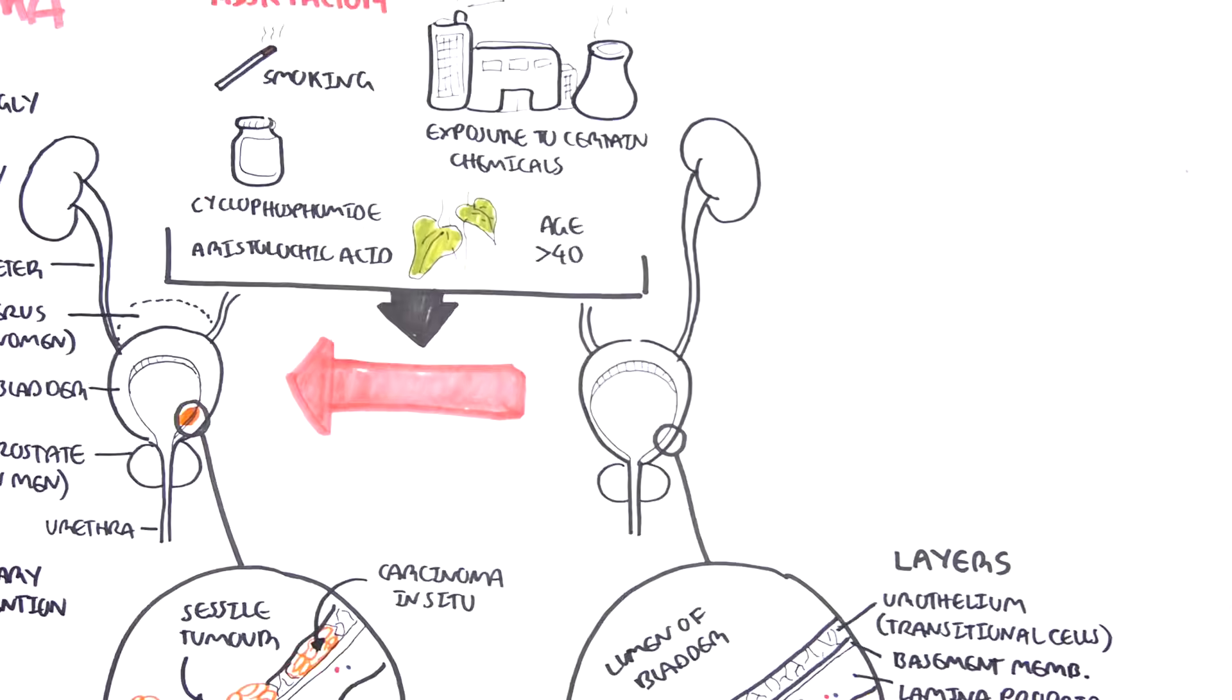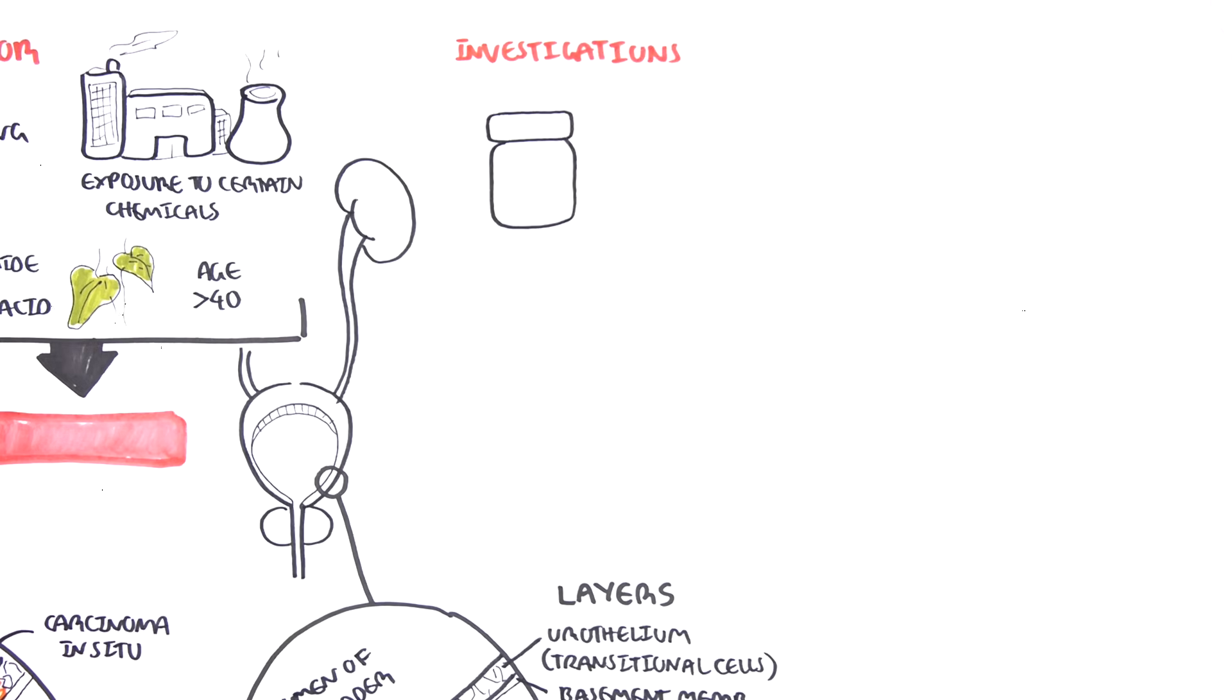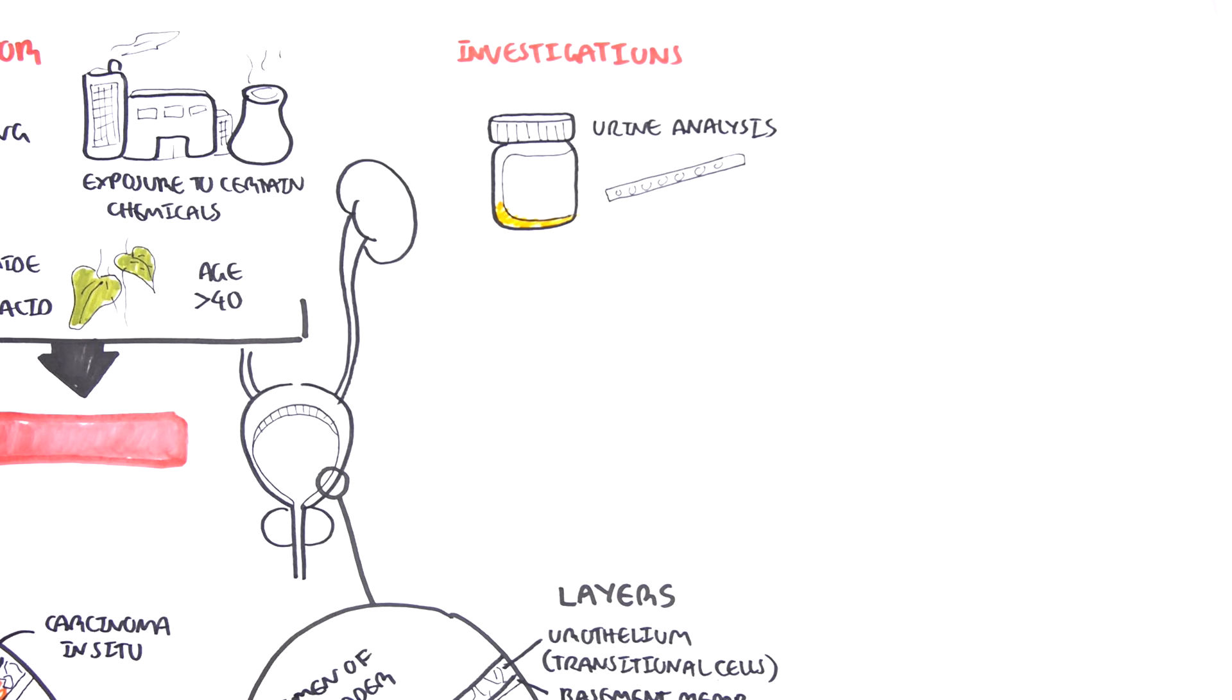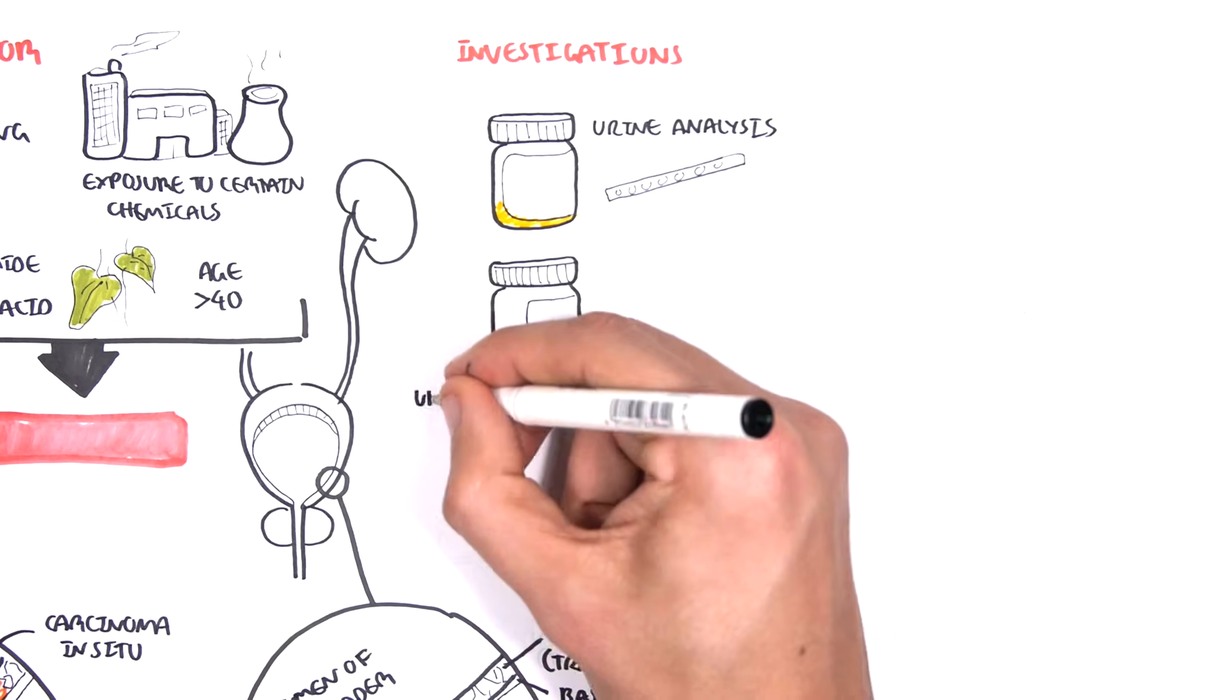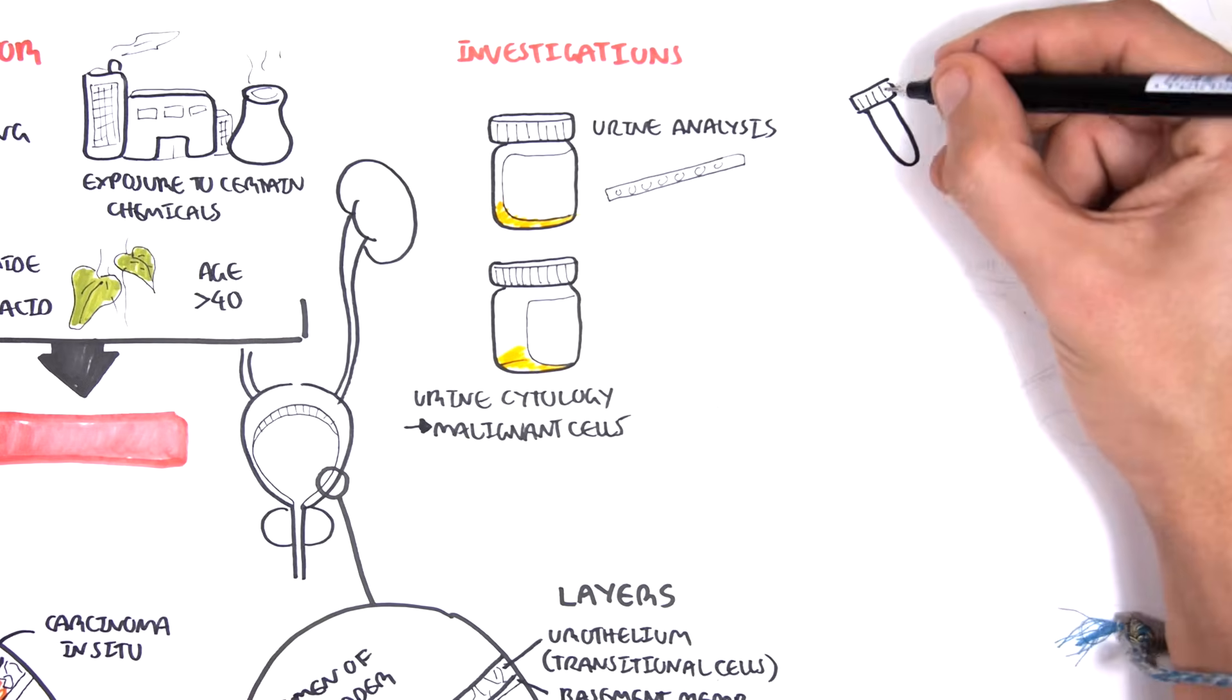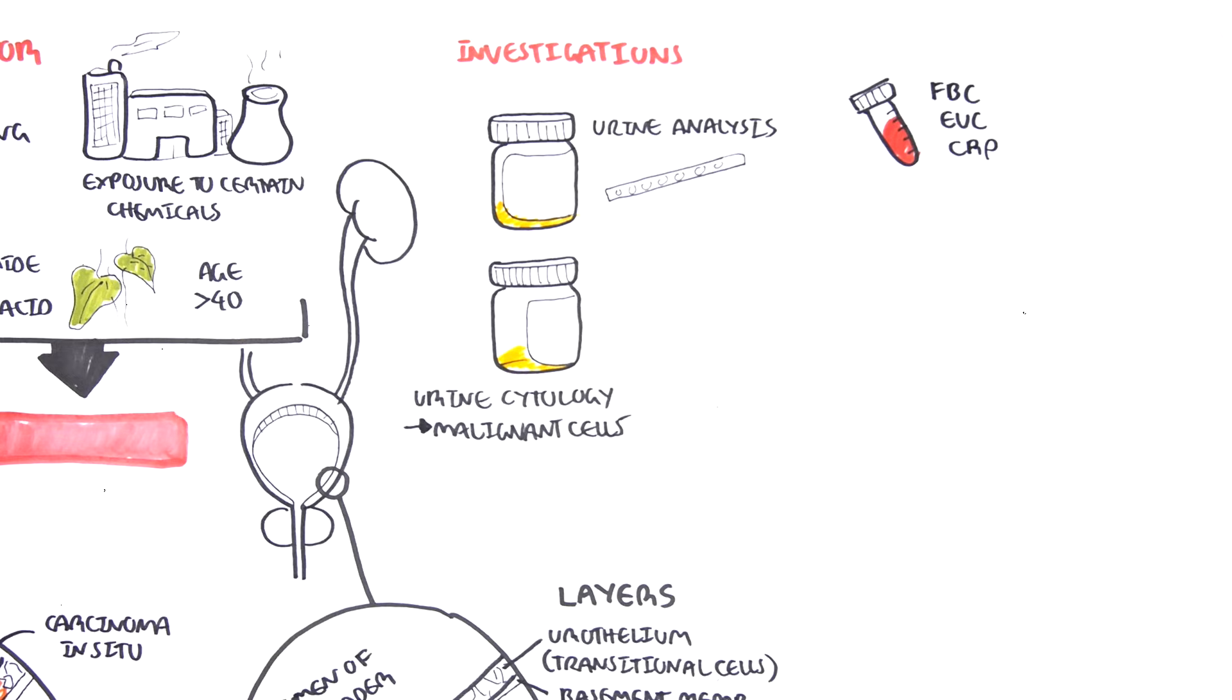And therefore, the investigation to order upon such presentation is you can do a bedside urinalysis, urine cytology to actually look at malignant cells, full blood count to check for anemia, EUCs to check for electrolyte urea creatinine which is a good marker for kidney function, CRP which can identify signs of malignancy, inflammation, or infection.